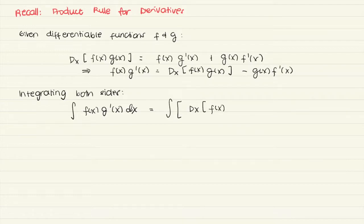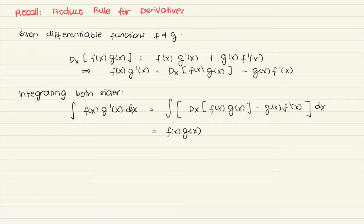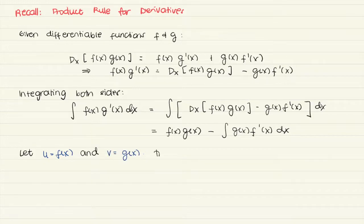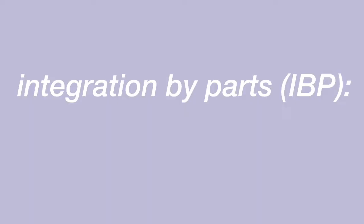On the other side, we get the integral of the derivative of f times g minus g f prime of x dx. Note that the integral of a derivative is just what's inside, so we just get f times g, minus the integral of g f prime of x dx. Now we will let u be f of x and v be g of x. Then taking derivatives, du will be f prime of x dx and dv will be g prime of x dx. So when we substitute everything, we get that the integral of u dv is equal to uv minus the integral of v du. This gives us our formula for integration by parts.